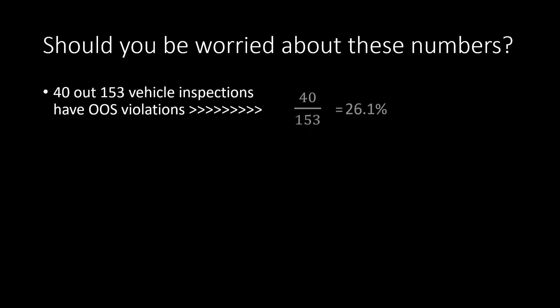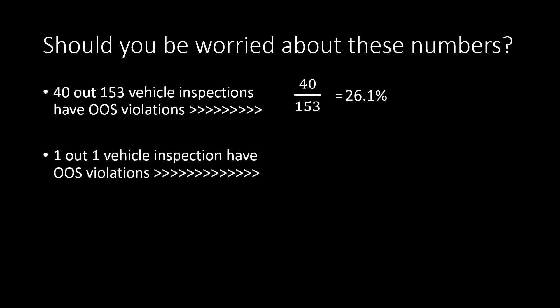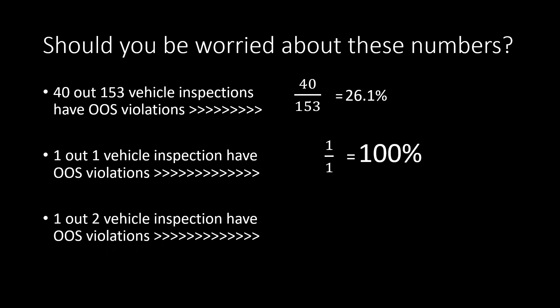Should you be worried about these out-of-service rates? Insurance companies are looking at them and most of the time they misinterpret what they mean — they see a high out-of-service rate and jack up your premiums. My example carrier has 153 vehicle inspections, so one more inspection won't make a huge difference. But a smaller carrier just starting out that gets an inspection with a vehicle out-of-service violation — boom, that's an instant 100%. The somewhat good news is that if the carrier gets one more clean inspection with no out-of-service violations, the math would be 1 divided by 2, dropping that 100% down to 50%. Inspections get to SAFER fairly quickly, so the change can happen in days — if, and that's a big if, the carrier gets one more clean inspection.